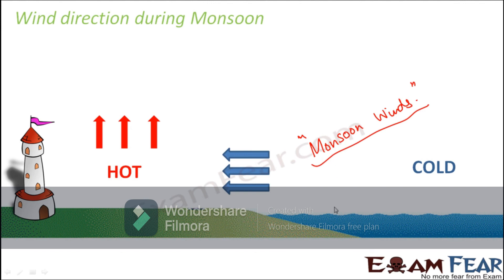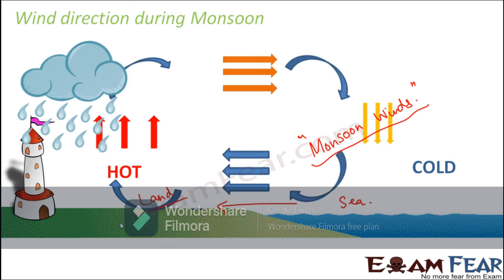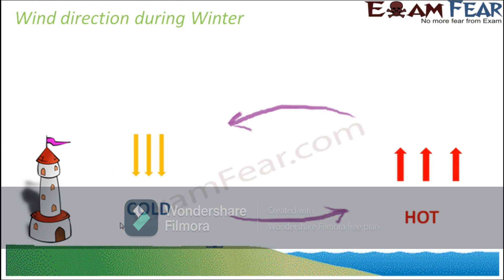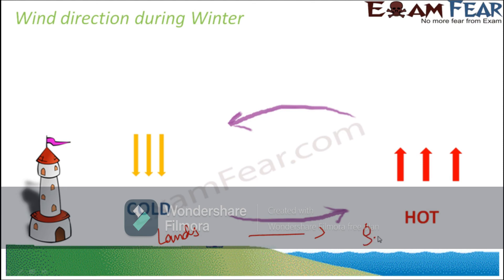Exactly the reverse happens during winter. In winters, the days are not hot and sunny, so the land remains cooler compared to the oceans. Therefore, you have the warm air just above the oceans. This warm air, being lighter, moves upward, and as a result, the cold air flows from land to the ocean, taking up the space emptied by the warm air. So during winters, the winds blow from land towards the sea.